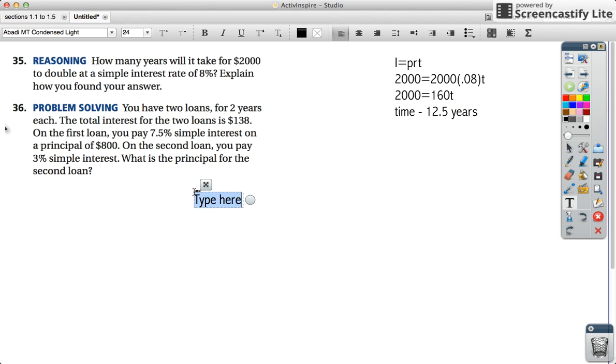Alright, 36. You have two loans. Oh, two loans. Notice what I'm going to do. I'm going to write I equals PRT twice. So the total interest. We don't know what each one is. We're going to leave it as I. The first loan.